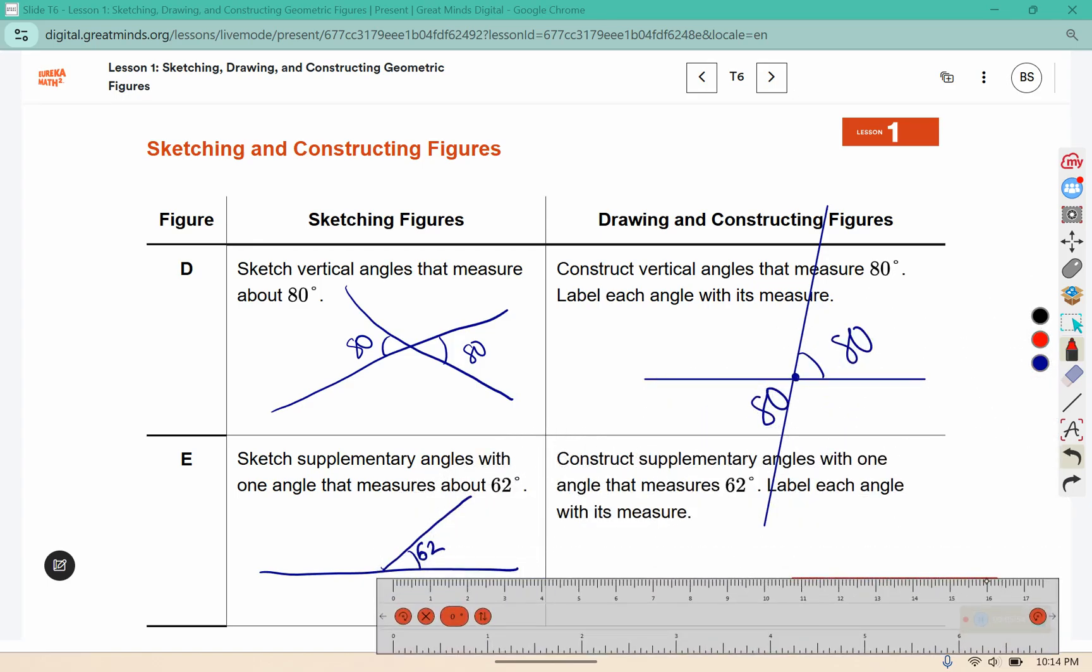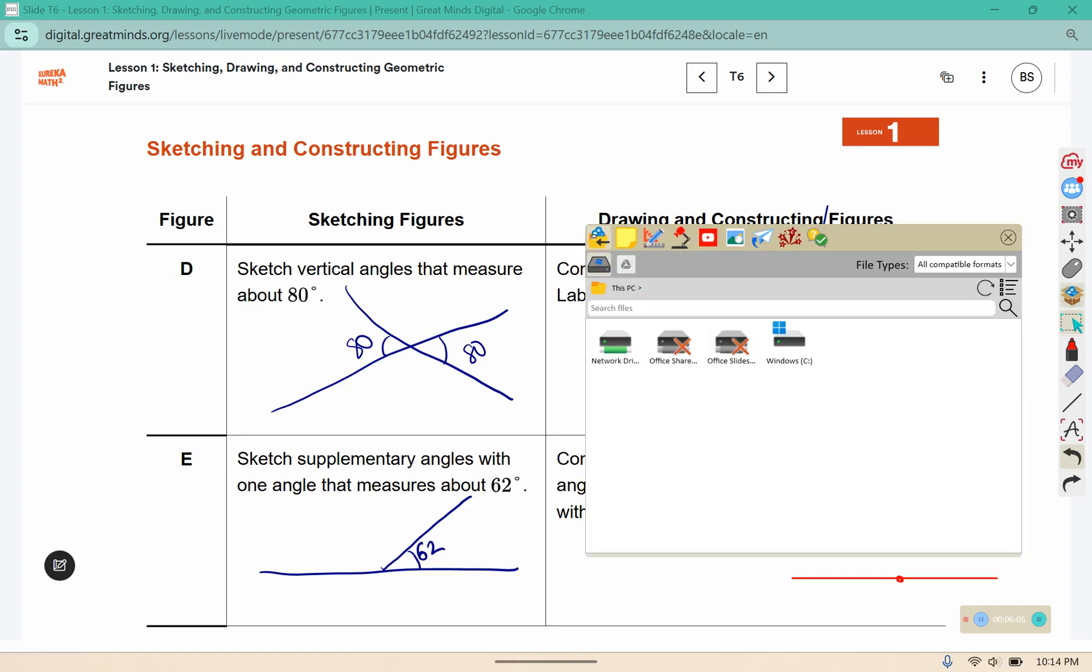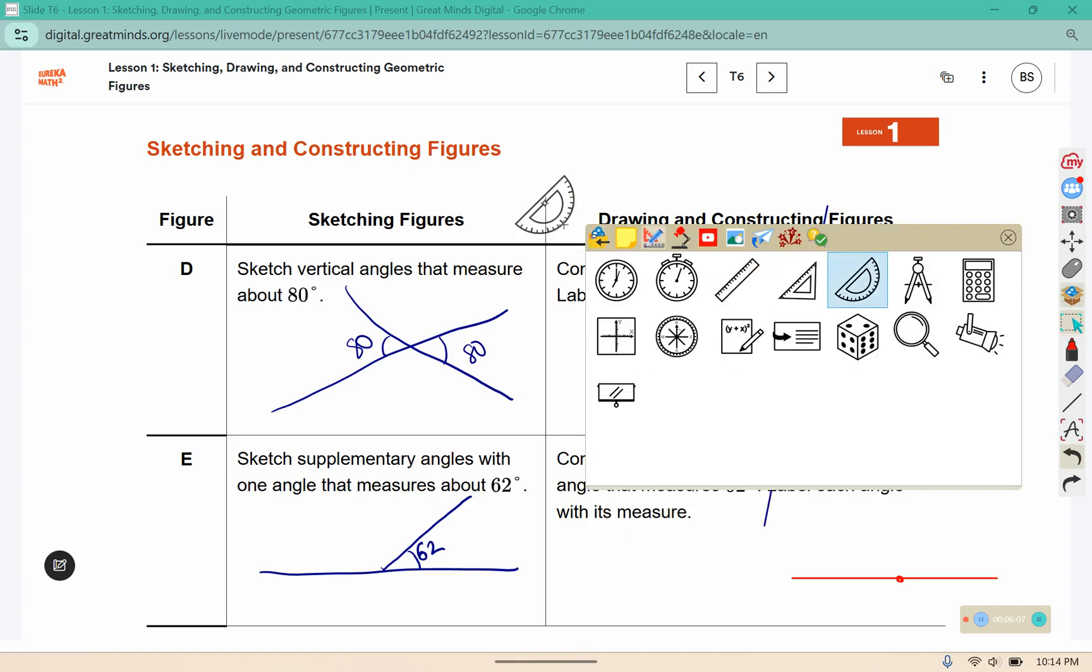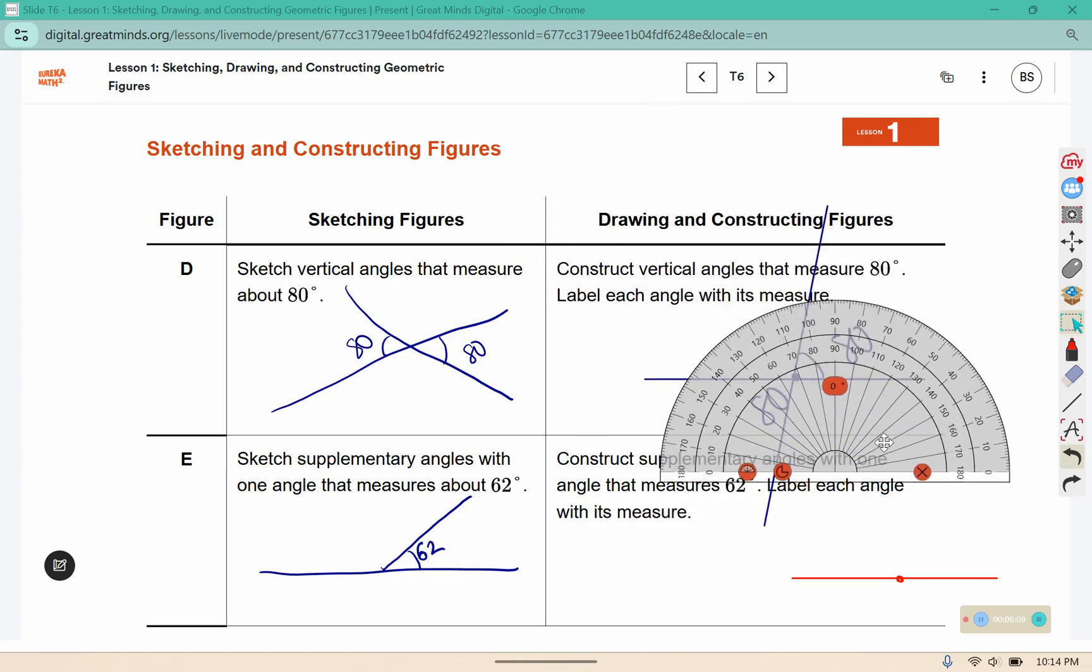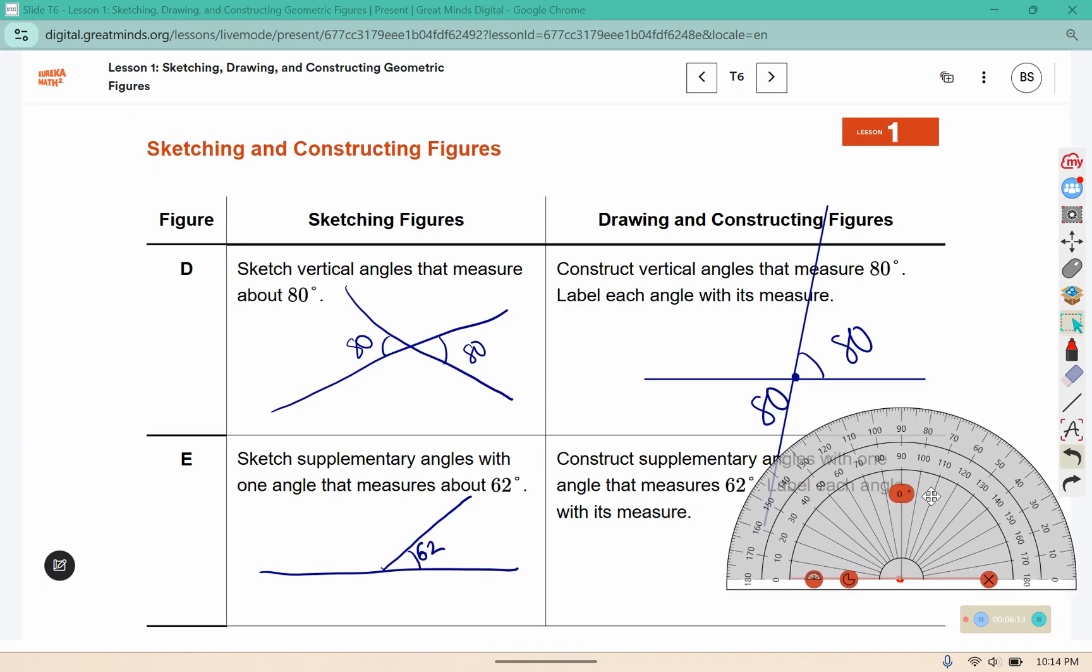With this one we'll start with a straight line and again place a dot in there to help us with our protractor. This time we're going to put our mark at 62, so just over 60.